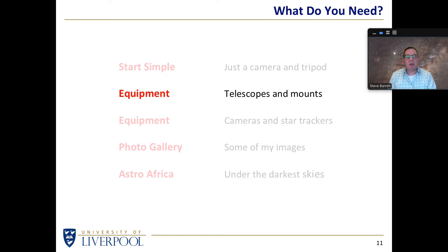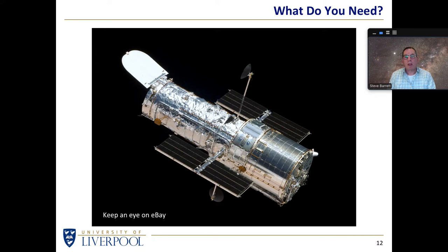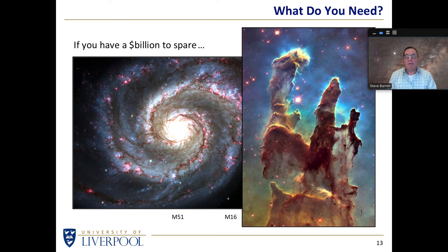Let's go beyond just a camera on a tripod and look at some slightly more expensive equipment. So if your budget stretches to it, you can keep an eye on eBay because sooner or later the Hubble is going to come to the end of its life — it's been doing wonderful work for the last 30 or so years but it won't last forever. If you've got a few billion dollars to spare, you can get wonderful images such as I'm sure you've seen over the last 30 years.